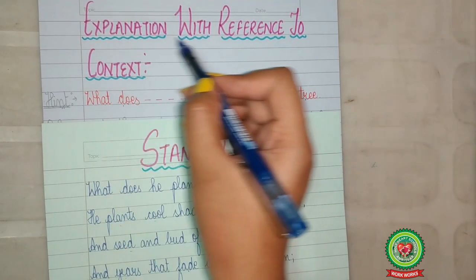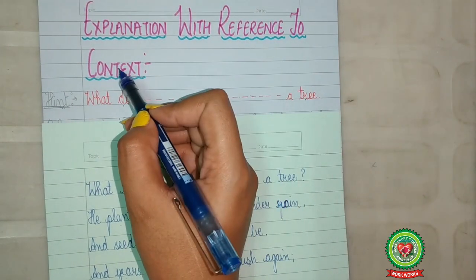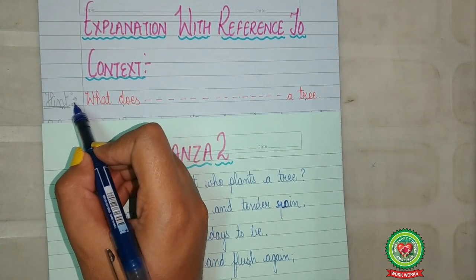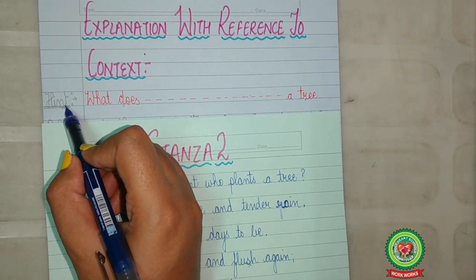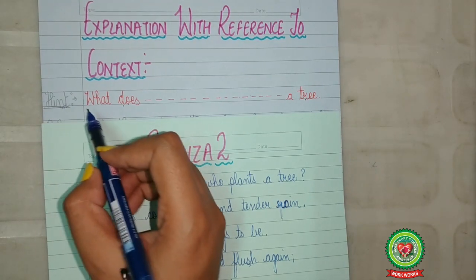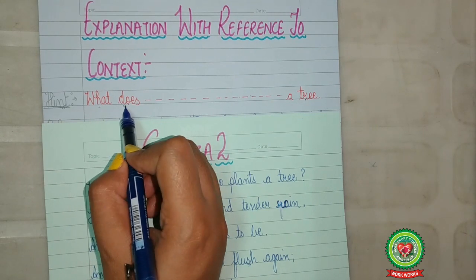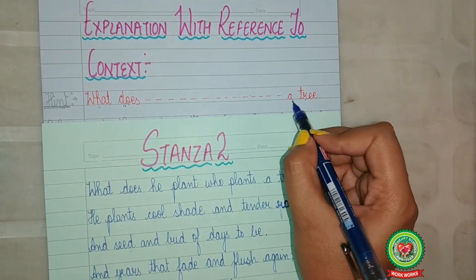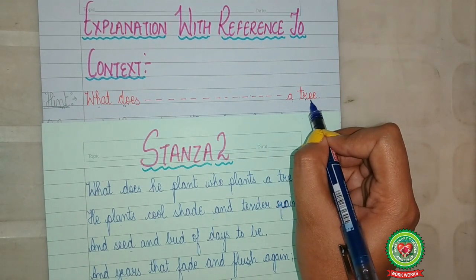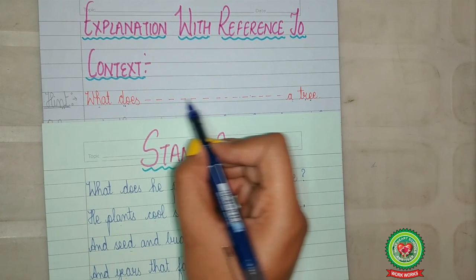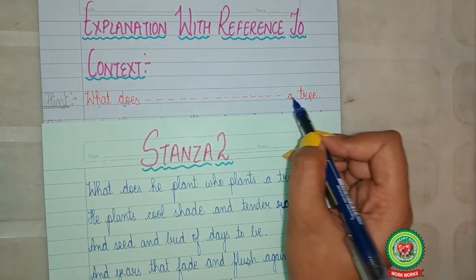We will do the explanation with reference to context. First, we will write down the hint. It should be written outside the margin line with a pencil and we will underline it. For writing down the hint, we will write the first two words of the first line of stanza 2 and the last two words of the last line of stanza 2 — that is, 'What does — — — a tree?'